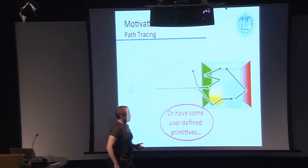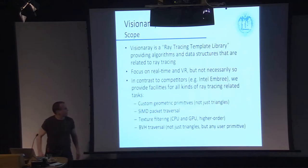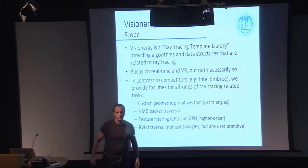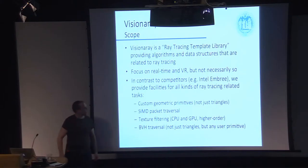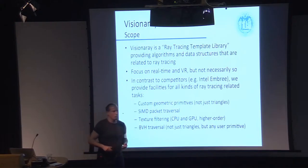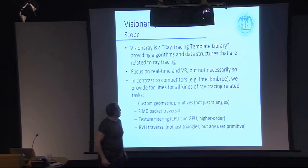Variations on this theme are possible — you have the same algorithm, say path tracing, but you want to use a custom primitive that the software doesn't provide, such as cylinders or freeform surfaces. This is where Visionary comes in. Visionary implements a whole bunch of algorithms in a generic fashion, just like Boost or the STL does for general purposes — but for ray tracing related problems. Visionary has a strong focus on real-time algorithms, meaning the intrinsic algorithms are highly optimized, though that is not a necessity.